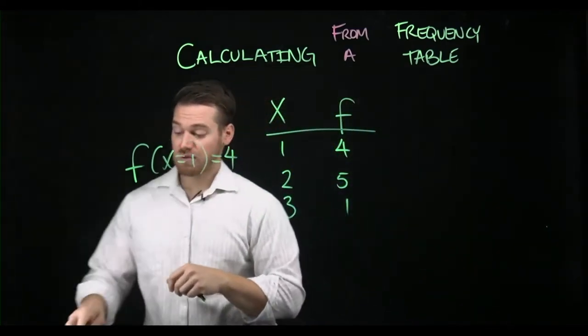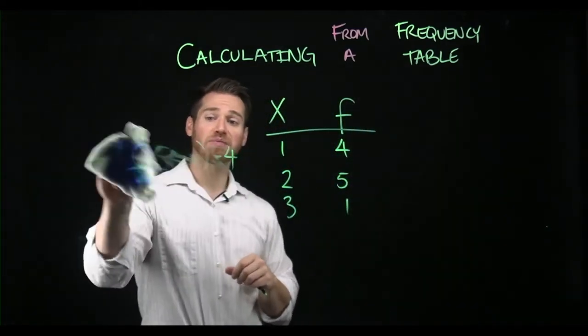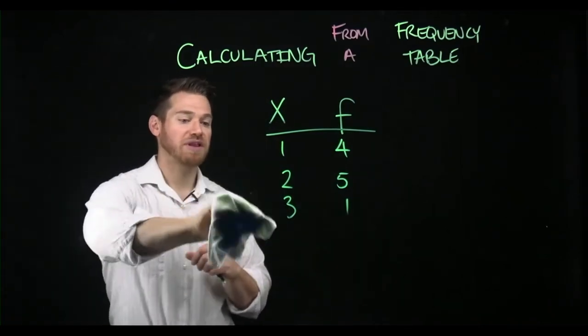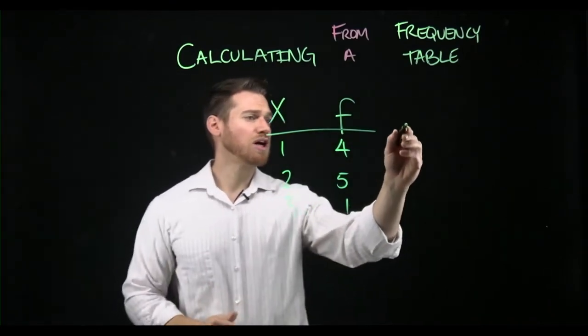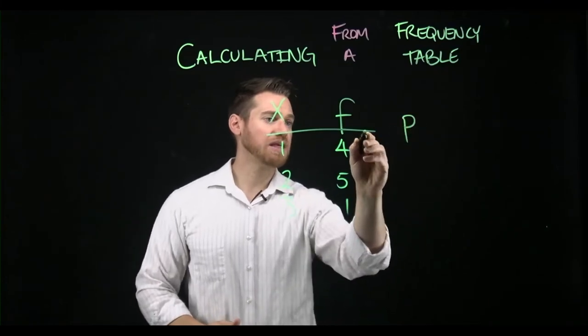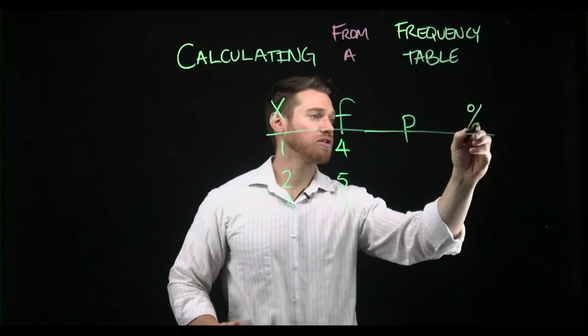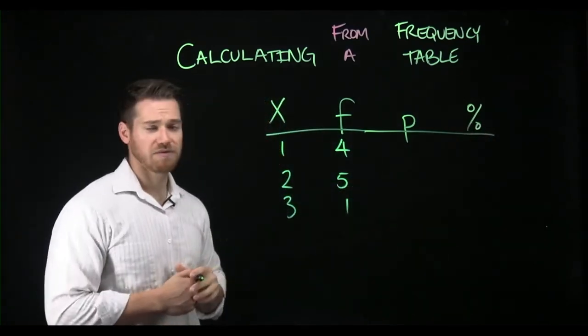But I may also wanna do something like, well, what's the proportion of scores or the percentage of scores that occur with that value? So a proportion or a P, sometimes written P of X, we're gonna write just P here, and a percentage are closely related ideas that we often see in frequency tables.